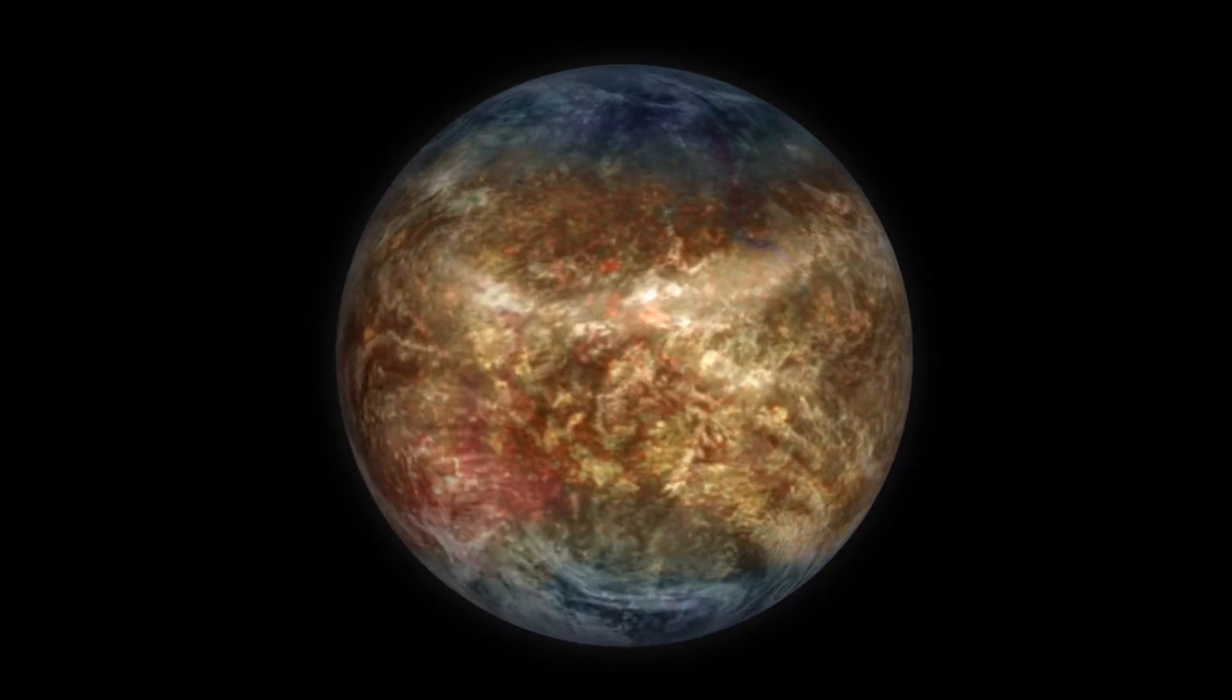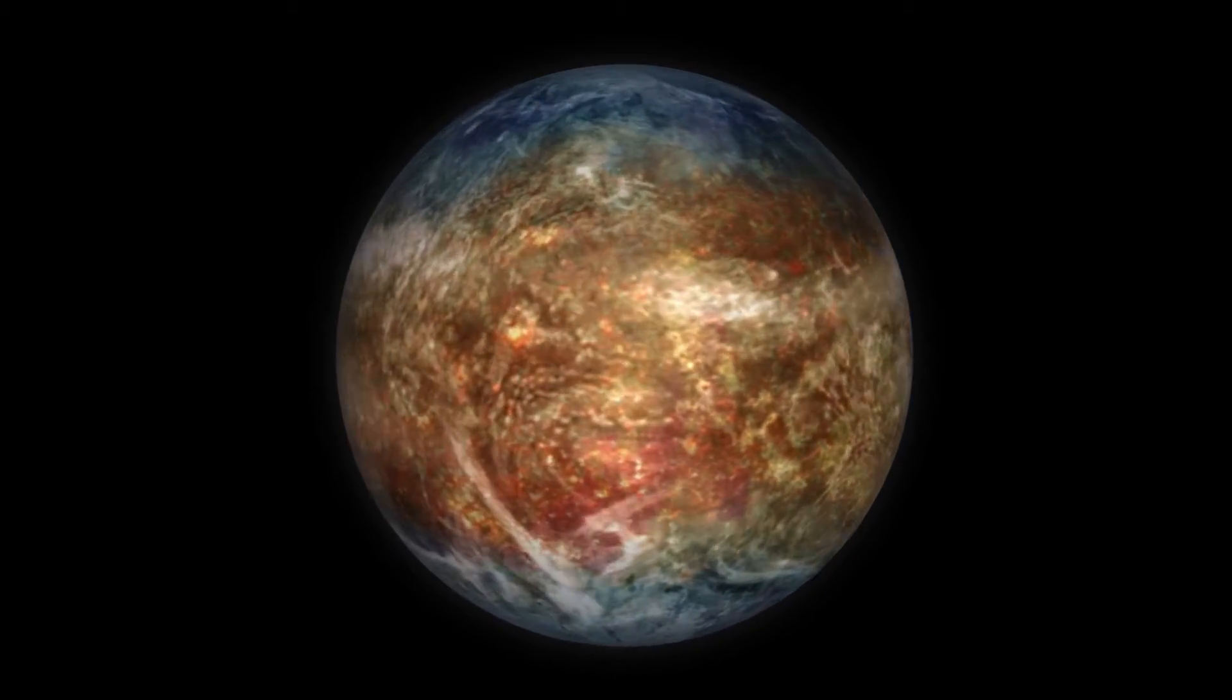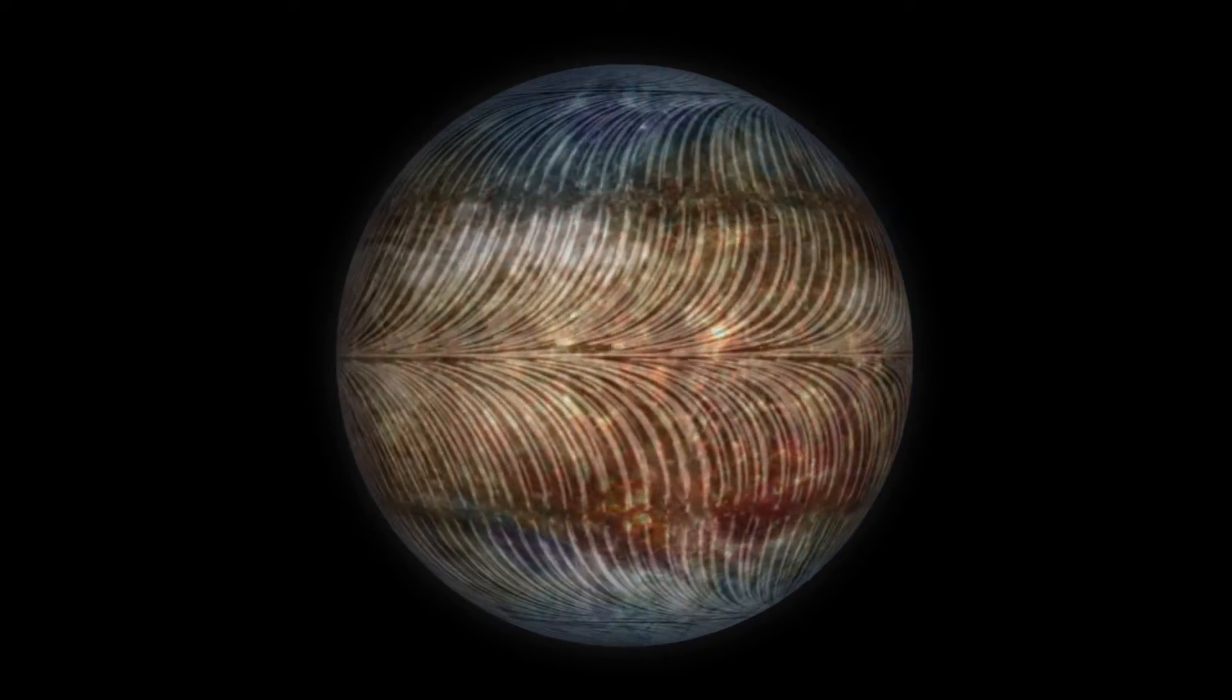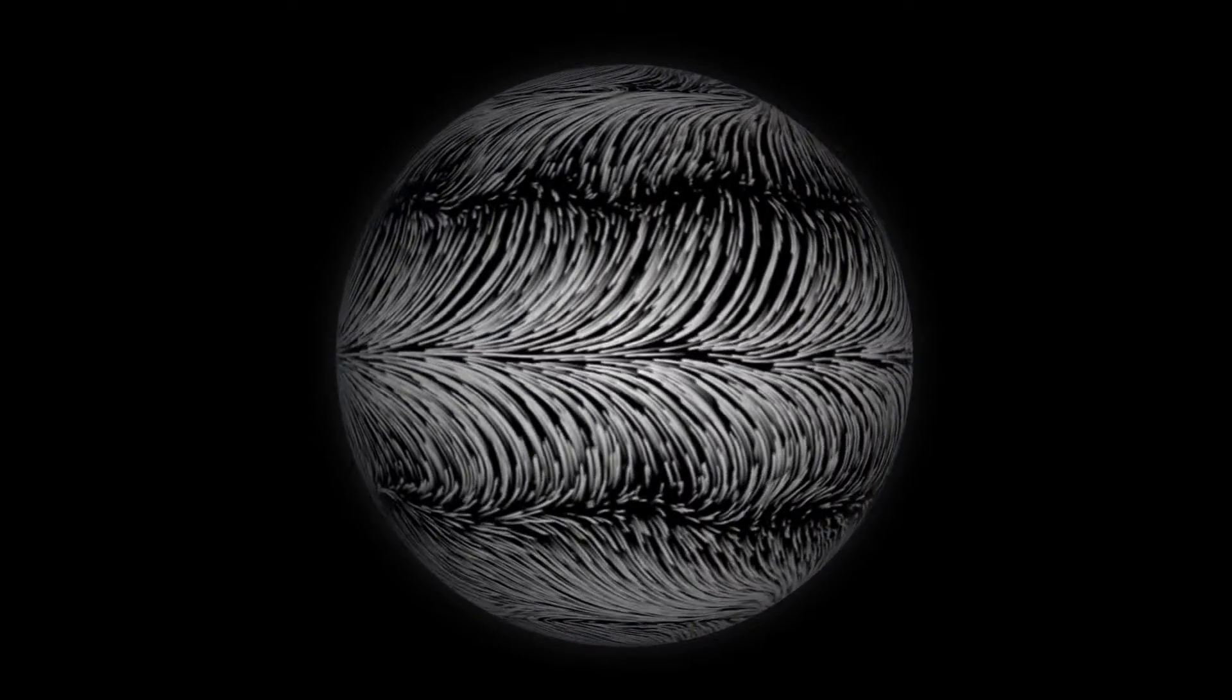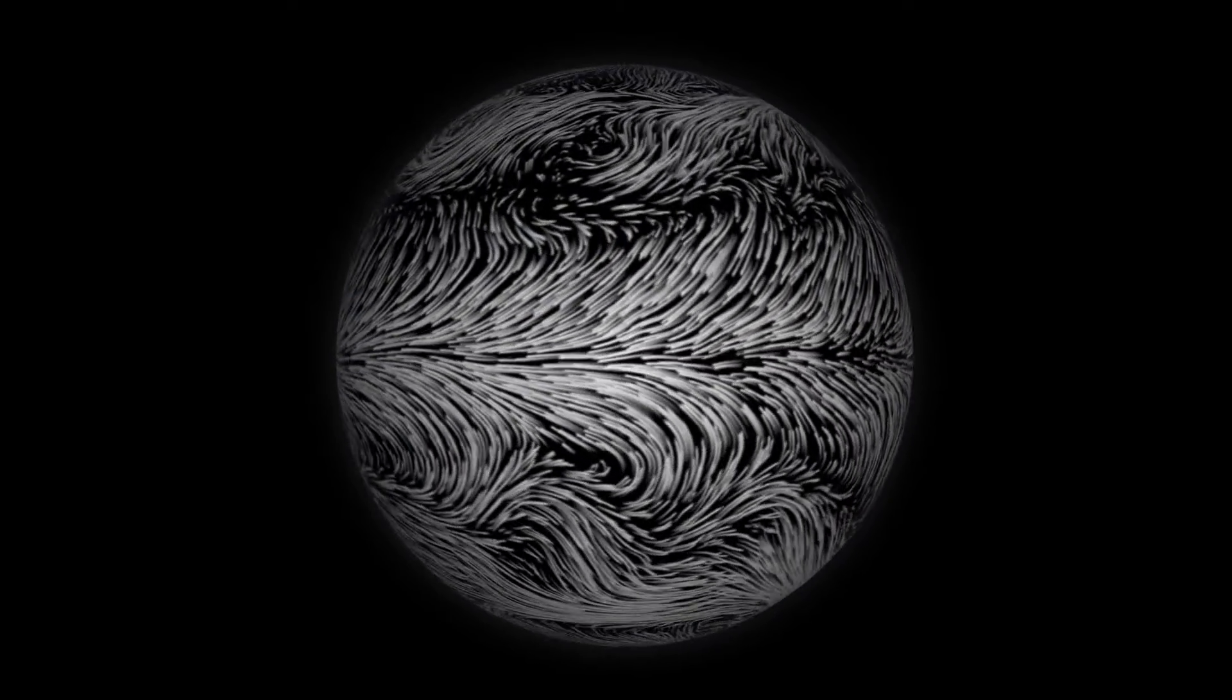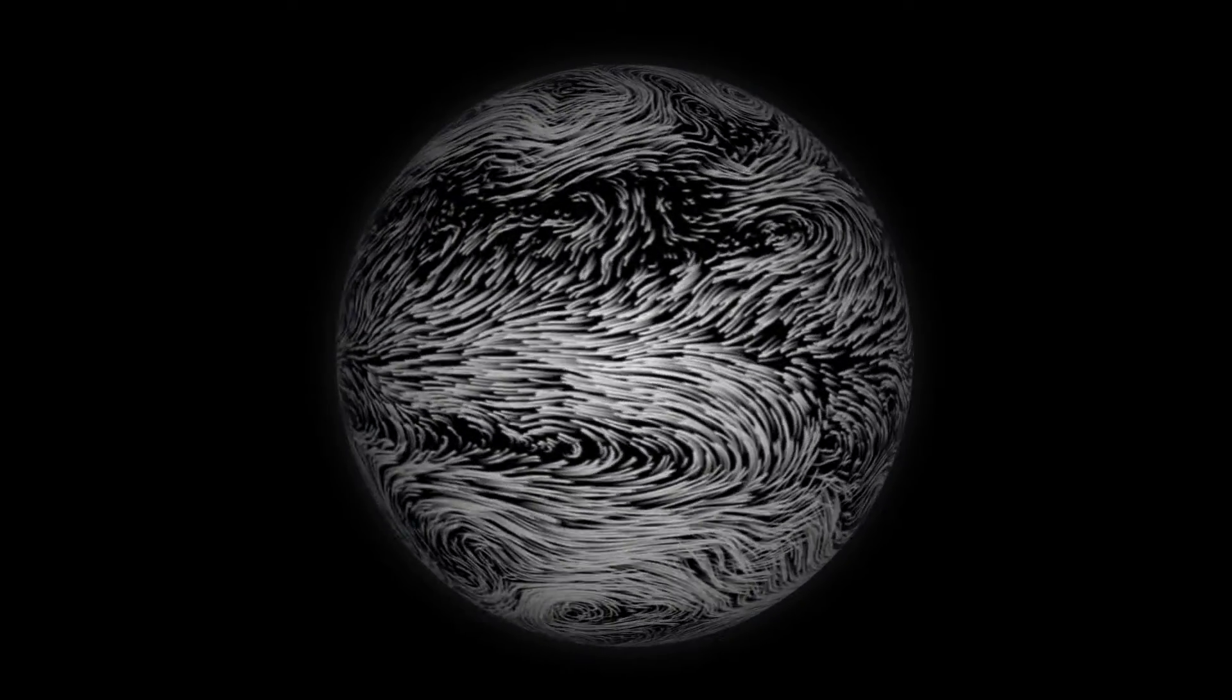It's this planet's rotation, its spin, that sets up the forces to put everything in motion. Rotation prompts a phenomenon called the Coriolis effect, which sends straight paths into curves.